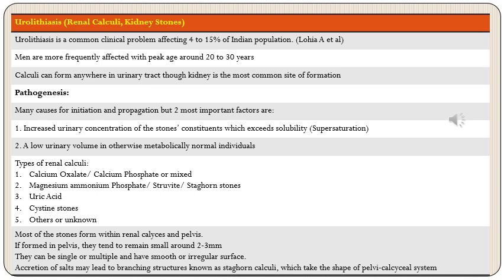Urolithiasis, also known as renal calculi or kidney stones, is a common clinical problem affecting around 4 to 15 percent of the Indian population. Men are more frequently affected than females with a peak age around 20 to 30 years. Calculi can form anywhere in the urinary tract, although the kidney is the most common site of formation. The two most important factors in pathogenesis are supersaturation and low urinary volume.